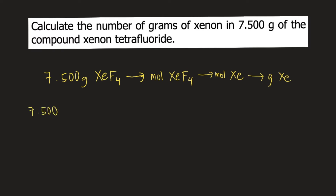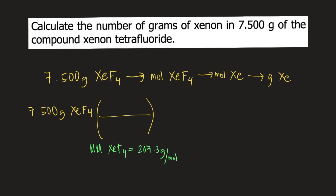Let's start the solution with 7.5 grams of xenon tetrafluoride. To convert this into moles of xenon tetrafluoride, we need the molar mass of xenon tetrafluoride, which is equal to 207.3 grams per mole. So we put 207.3 grams of xenon tetrafluoride on the bottom and 1 mole of xenon tetrafluoride on top, so the grams cancel and now we have moles of xenon tetrafluoride.